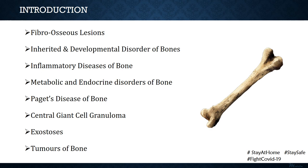Students are advised to find examples for each of these categories. It should be noted that Paget's disease and central giant cell granuloma are individual lesions without subdivisions, as is the case for exostosis. For the remaining categories, it is ideal to note down the various types and remember at least a few of these.